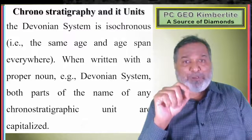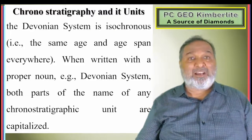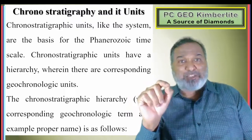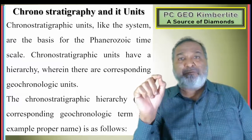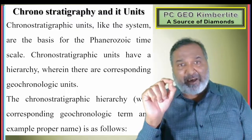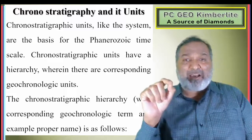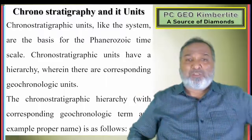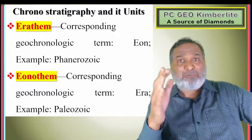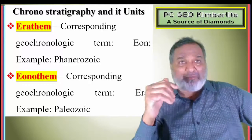When written as a proper noun, both parts of the name of any chronostratigraphic unit are capitalized, e.g., Devonian System. Chronostratigraphic units like the system are the basis for the Phanerozoic time scale. Chronostratigraphic units have a hierarchy wherein there are corresponding geochronologic units. The chronostratigraphic hierarchy with corresponding geochronologic terms and example proper names is as follows.